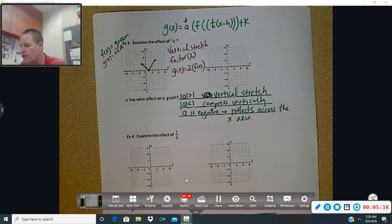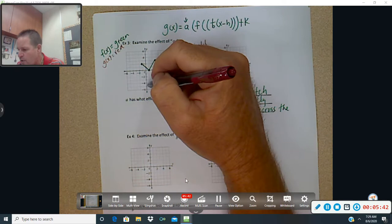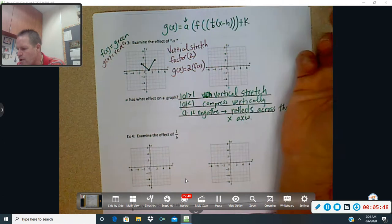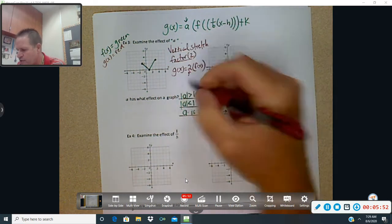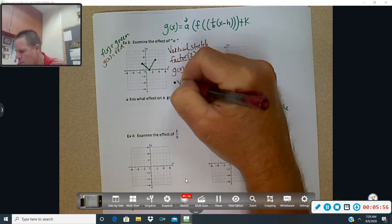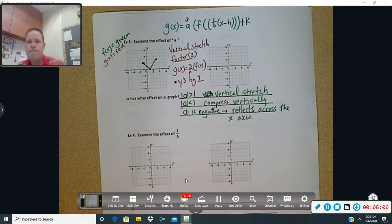Now, how are you going to vertically stretch? You're going to be moving up and down. Is up and down x, or is up and down y? Up and down is y. So what we're going to do is, to do this, so this is, again, this vertical stretch factor of 2, we are going to multiply the y's by 2.